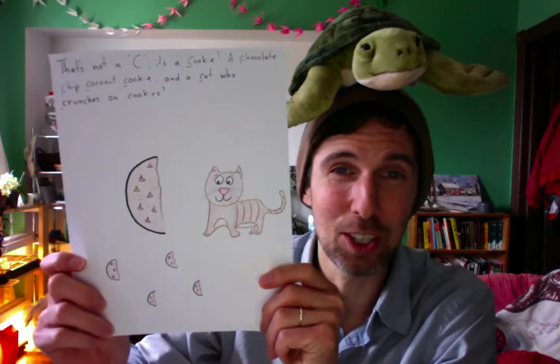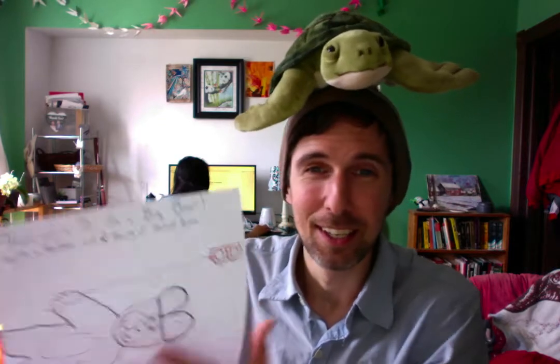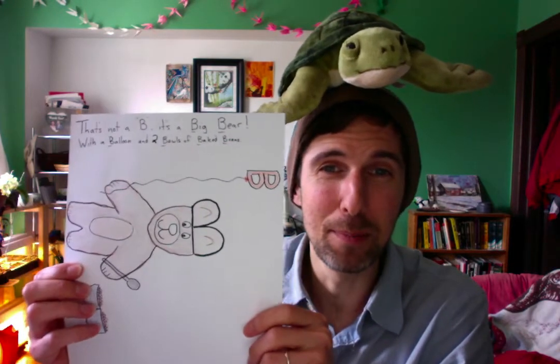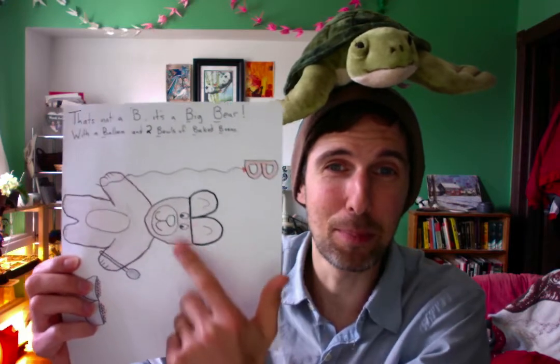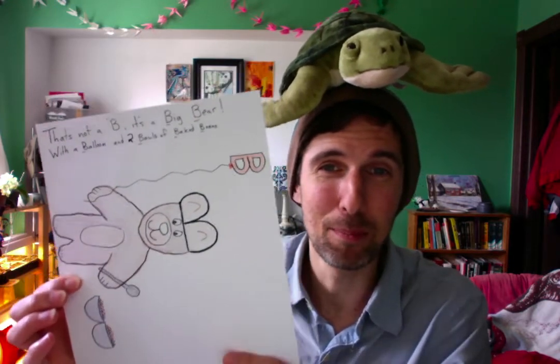And like with the C — cat, cookie — they have that C sound. And for the B one, they all have that B sound. So like bear, beans, bowl — they all start with B. But there are a lot of ways to do it.